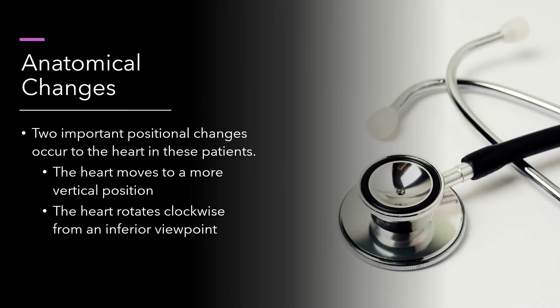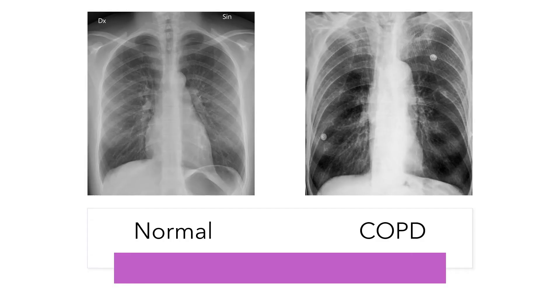There are two important positional changes that occur in these patients. The first is that because the diaphragm flattens, the heart — which typically is cocked a little bit to the left — drifts into a more vertical pattern. Then it rotates clockwise from an inferior viewpoint, so the right ventricle ends up pointed straight at the front of the chest. It drifts vertical and rotates slightly, with the right ventricle rotating forward.